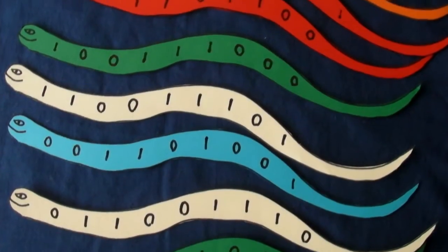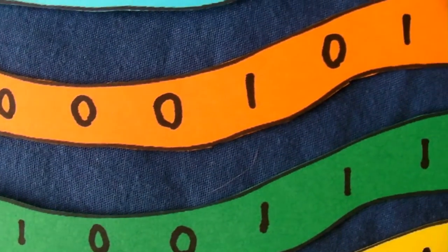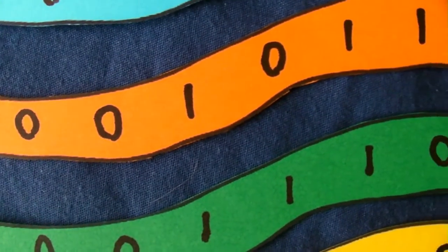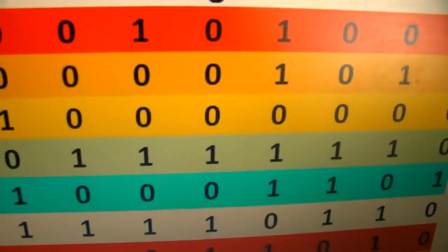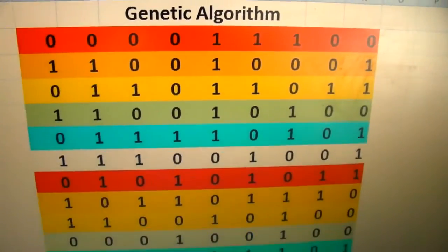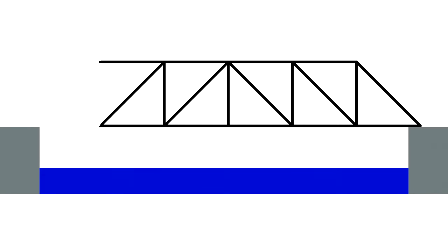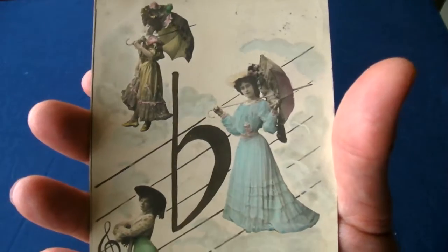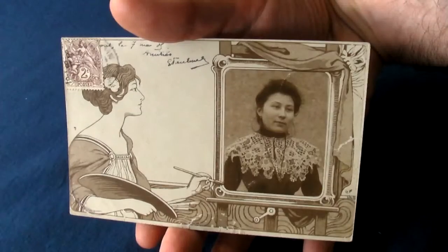First of all you have a series of virtual creatures. Binary strings are quite often used to encode them because they're more in tune with our digital age. The ones and zeros could represent the presence and absence of structural components in a bridge, musical notes, or pixels in an art picture.